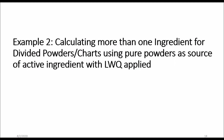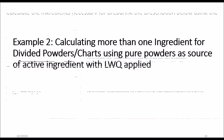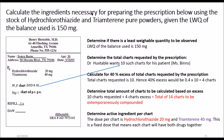We are going to be using a least weighable quantity. This example states: calculate the ingredients necessary for preparing the prescription below using the stock of hydrochlorothiazide and triamterene as pure powders, given the least weighable quantity of the balance used is 150 milligrams. The least weighable quantity is dependent on the instrument you're using — electronic balances all have different sensitivity requirements, and depending on your acceptability in terms of error, the least weighable quantity can be calculated.